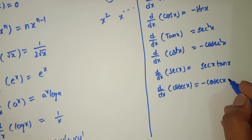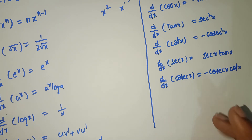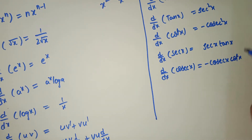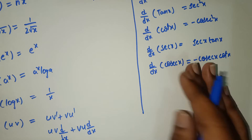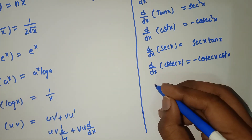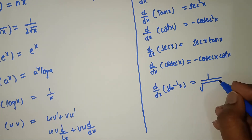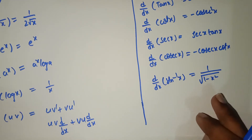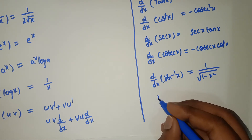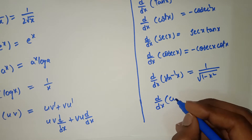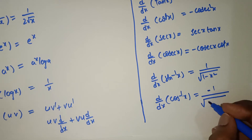Okay, negative value. Next, inverse trigonometric values. Trigonometric differentiation formulas are completed, now the inverse ones. d by dx of sin inverse x equals 1 by root over 1 minus x square. d by dx of cos inverse x equals minus 1 by root over 1 minus x square — here the negative comes.